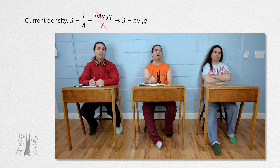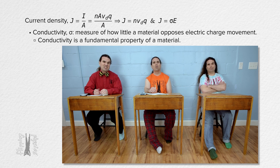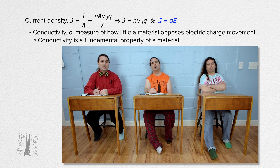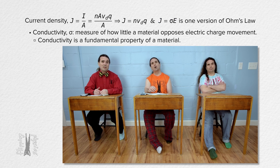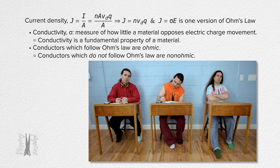We also know current density equals conductivity times electric field. The symbol for conductivity is a lowercase sigma, and conductivity is a measure of how little a material opposes the movement of electric charges. Conductivity is a fundamental property of a material. But that equation does not actually work for all conductors — some conductors are non-ohmic. Current density equals conductivity times electric field is one version of Ohm's law. Conductors which follow Ohm's law are called ohmic; conductors which do not are called non-ohmic.